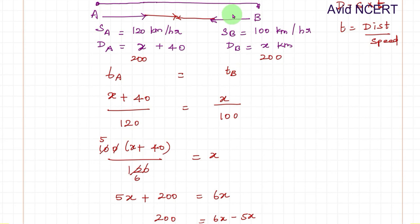So now to find the total distance, total distance equals distance A plus distance B. This problem can also be solved by different methods. This is one of the methods, whichever is easy for you. So distance A equals 200 plus 40, which is 240 plus distance B is 200, which equals 440 km.